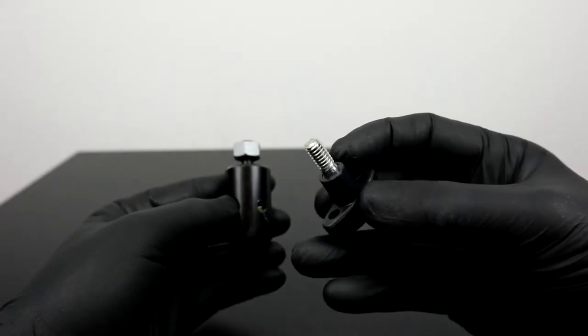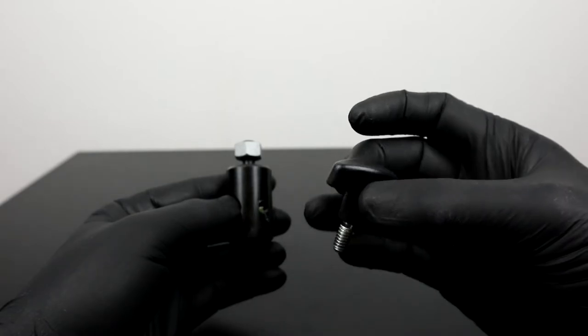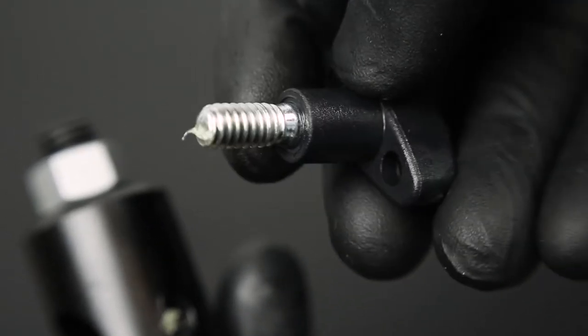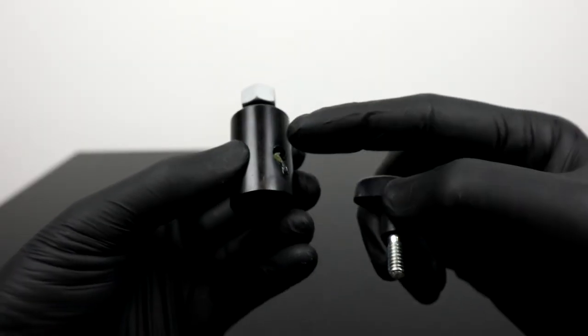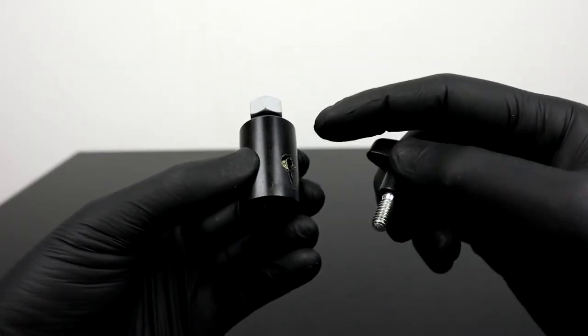The locking screw on the side also looks neatly finished. It also makes a solid impression and should therefore hold easily. As you can see, Manfrotto puts also a dash of grease here.